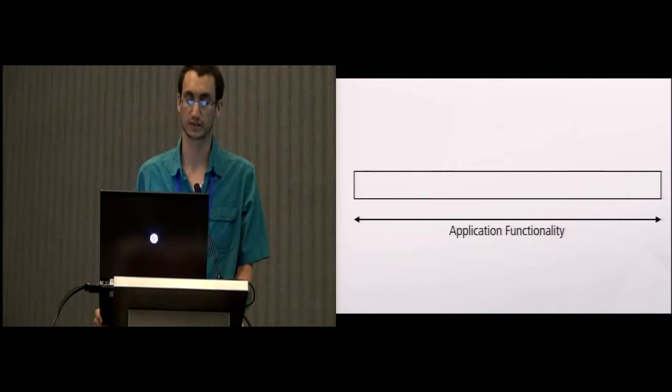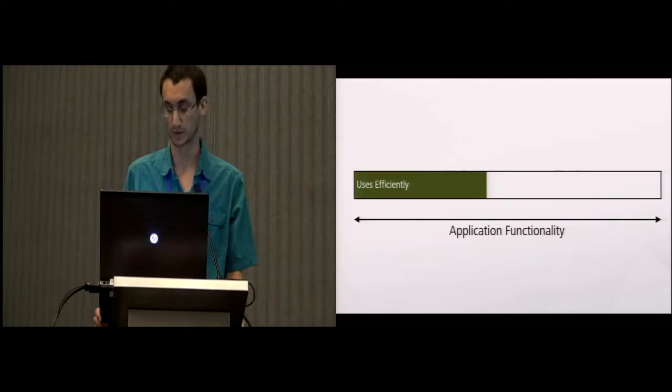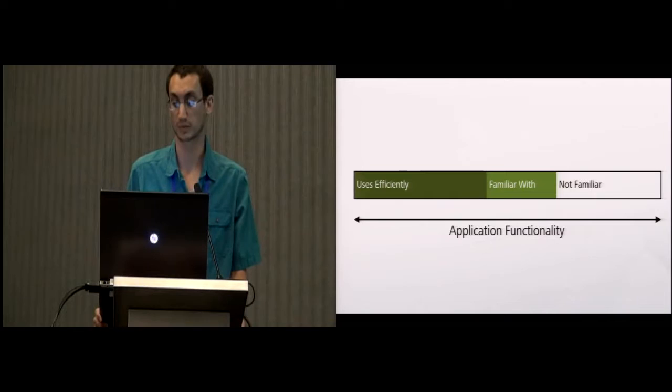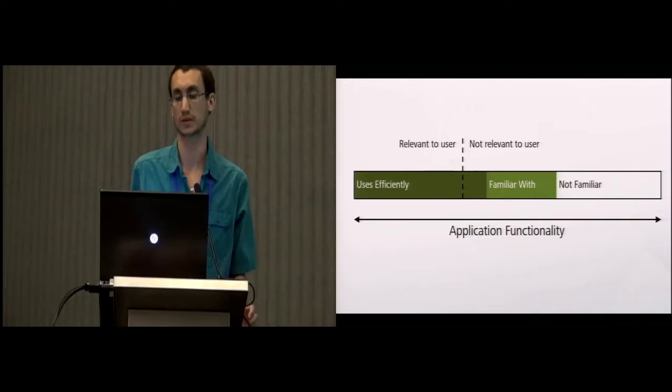We developed this framework visualization of how you can think about it. Imagine the space of the entire functionality of an application. You can divide this in a couple of ways. One way: some proportion users use efficiently, some they might be familiar with, and some they might not even be familiar with. Another way to divide the space is thinking about what percentage of functionality is relevant to the user versus not relevant.